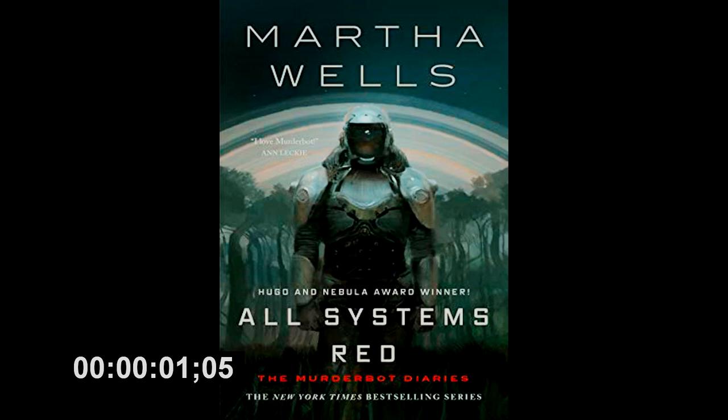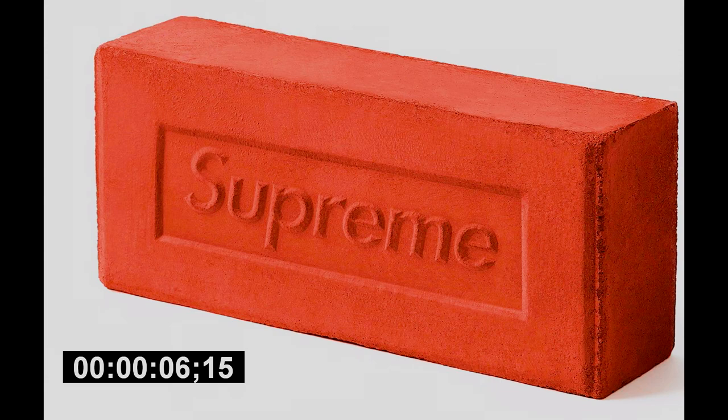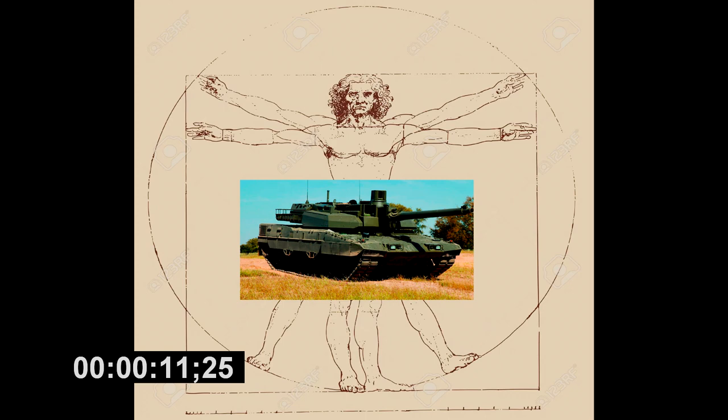All Systems Red by Martha Wells is a short, sub-200 page novel which is the first of a four-book quartet. It's simple, entertaining, and addresses some morally grey areas of storytelling. The main character is a semi-sentient, armoured humanoid construct that calls itself Murderbot. Fun, right?